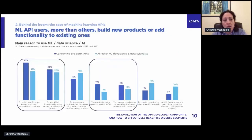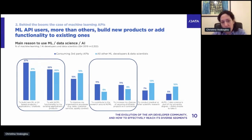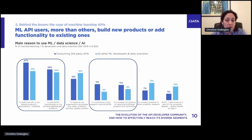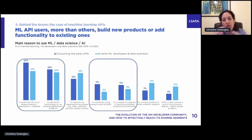We also asked them why they use ML. Comparing those who consume third-party APIs to everyone else, those who consume APIs are most likely either building new ML products or adding ML functionality to existing apps. They feel they can increase their chances of securing profitable projects. What this really means is that developers from other sectors are pouring into the ML sector, facilitated by the existence of APIs.